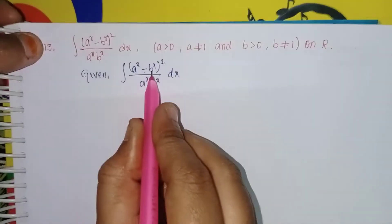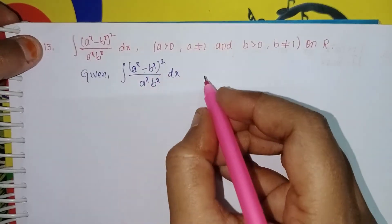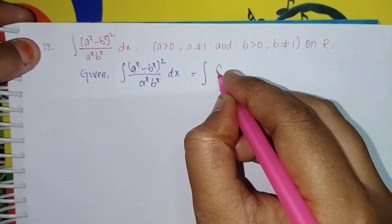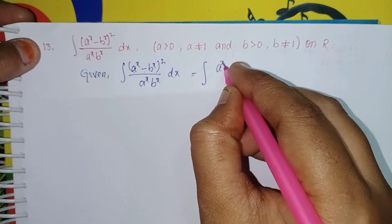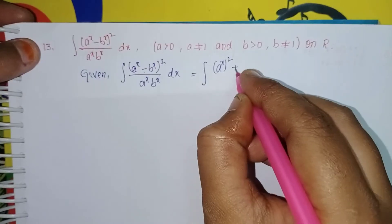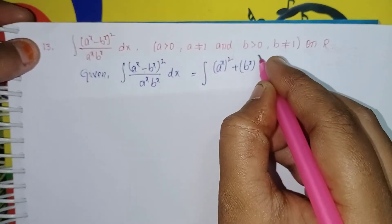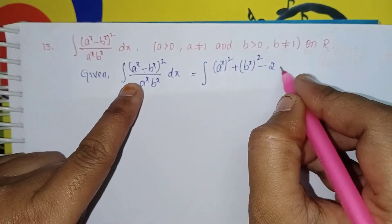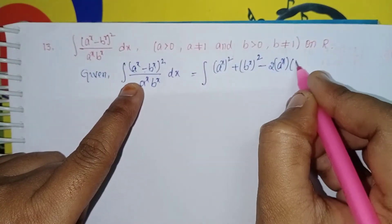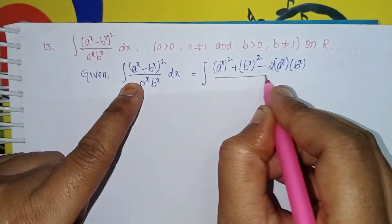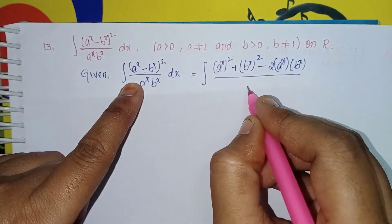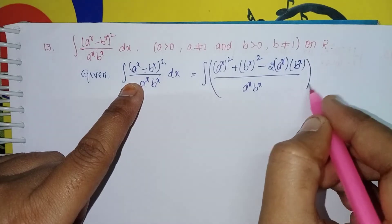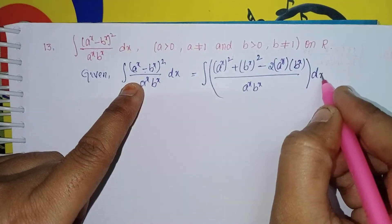Now apply the (a minus b) whole square formula. Expand to get: a squared plus b squared minus 2ab, all divided by (a^x into b^x), into dx.